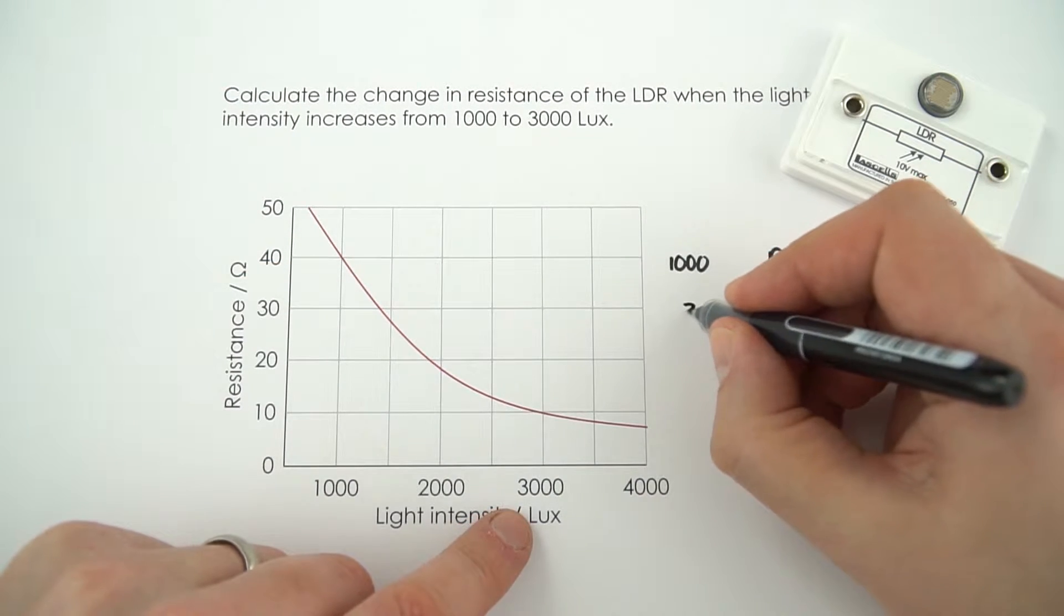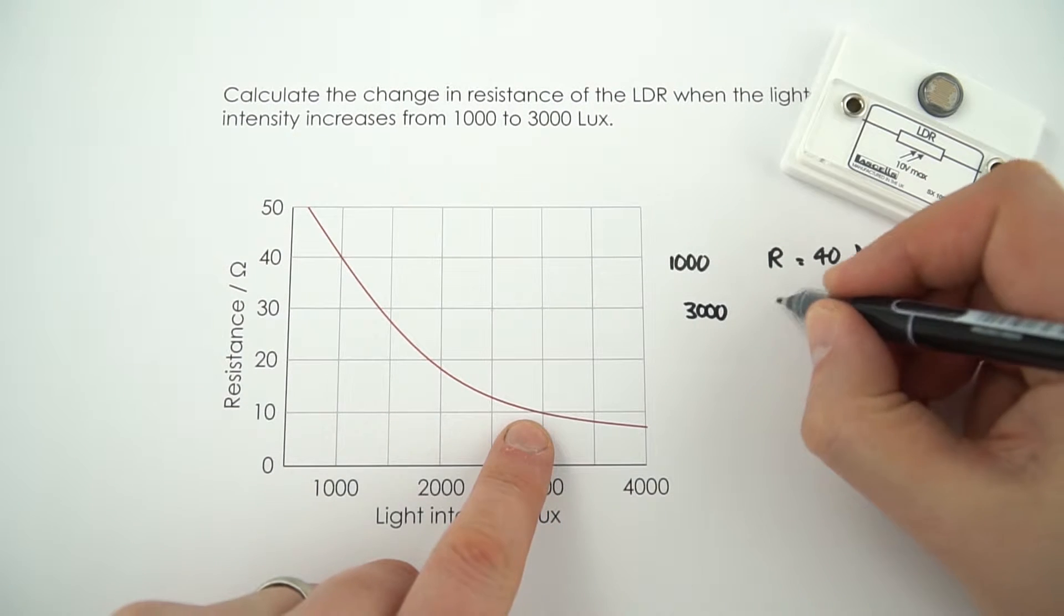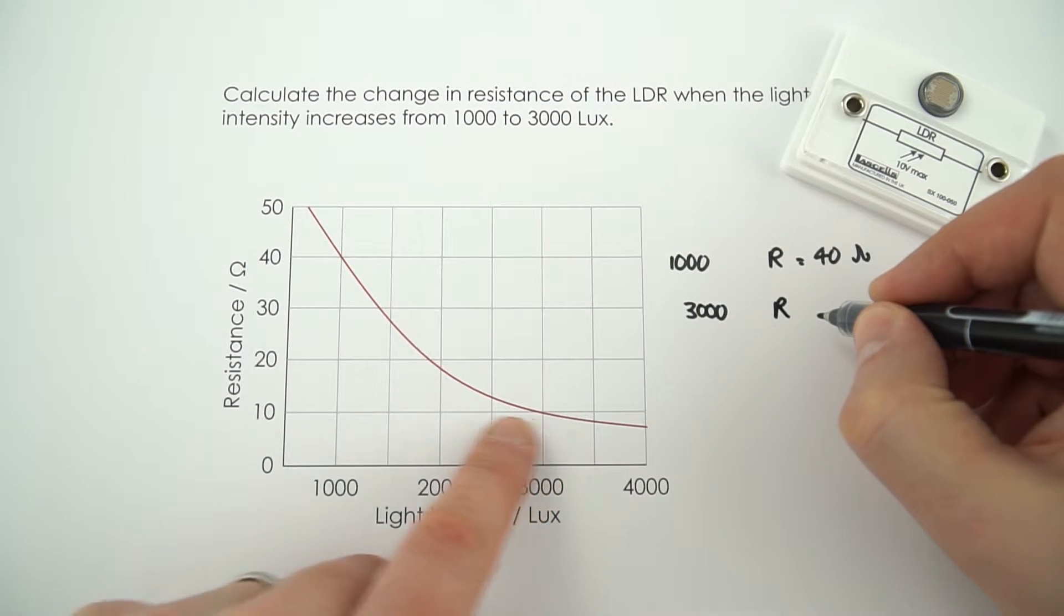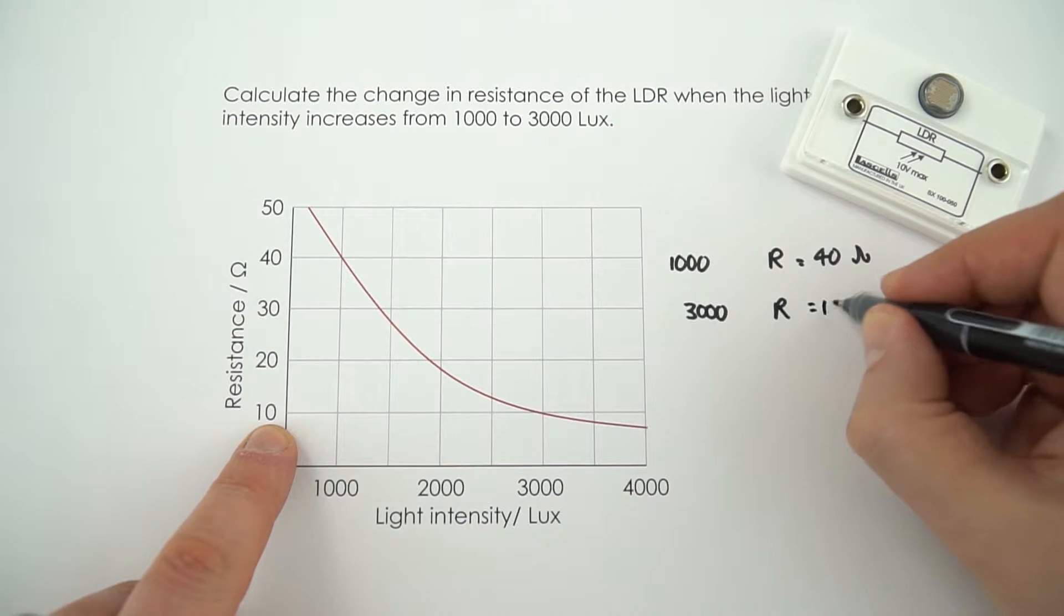But when the light intensity increases to 3000, here the resistance, if I just follow the line across, it's equal to 10 ohms.